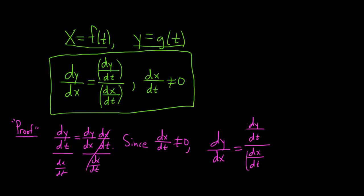Dividing through, you end up with dy/dx equal to dy/dt over dx/dt. So we get our formula, and that completes our really rough proof.